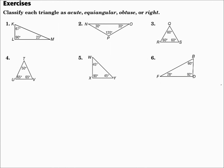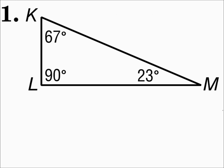Classify each triangle as acute, equiangular, obtuse, or right. For number one, look at the angle measures. This one has a right angle, so it's a right triangle. Right triangles have one right angle.